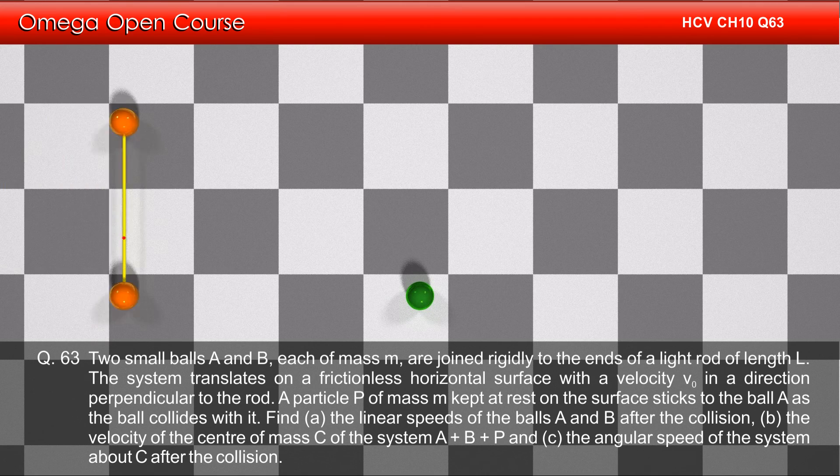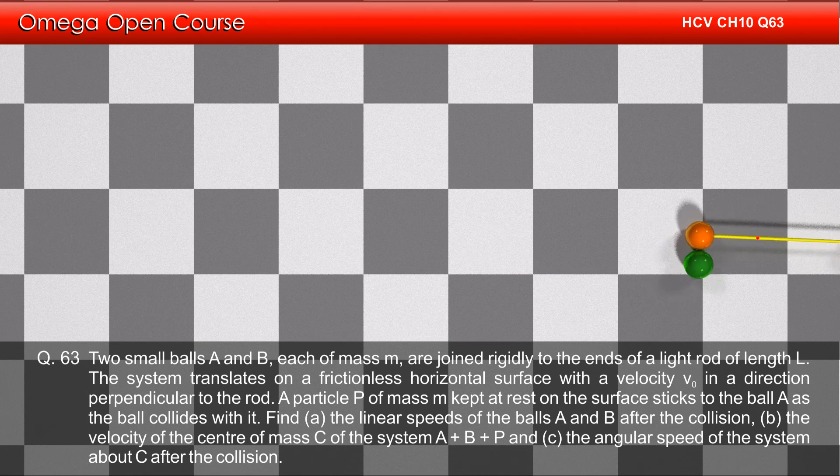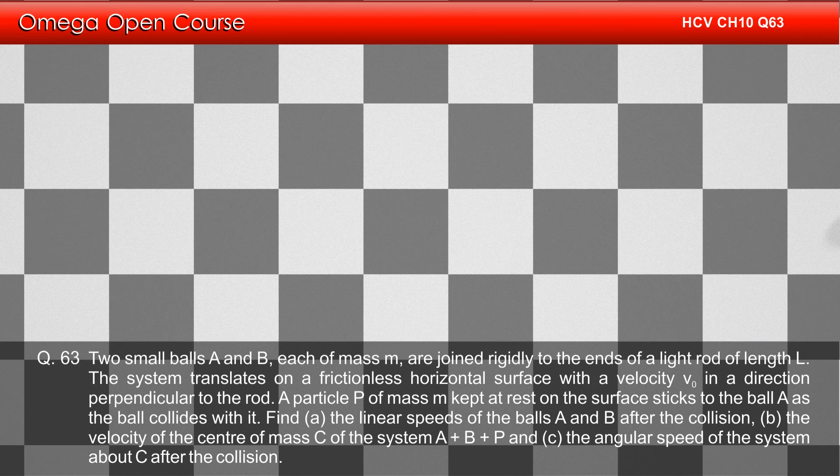Find A, the linear speeds of the balls A and B after the collision, B, the velocity of center of mass C of the system A plus B plus P, and C, the angular speed of the system about C after the collision.